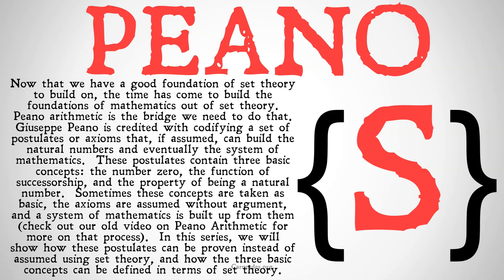These postulates contain three basic concepts: the number zero, the function of successorship, and the property of being a natural number. Sometimes these concepts are taken as basic — the axioms are assumed without argument, and a system of mathematics is built up from those postulates, without trying to build down into a more basic logical or set theory structure. Check out our old video on Peano arithmetic for more on what that process looks like.